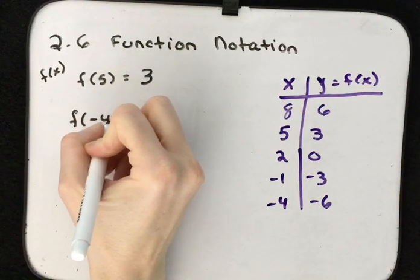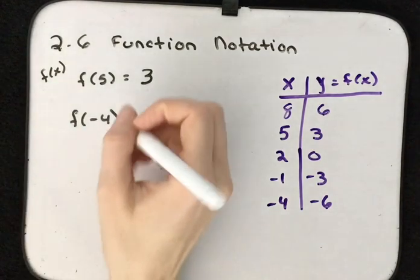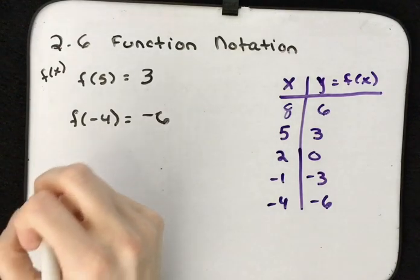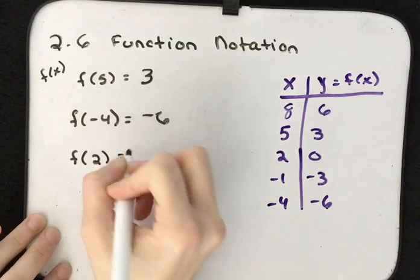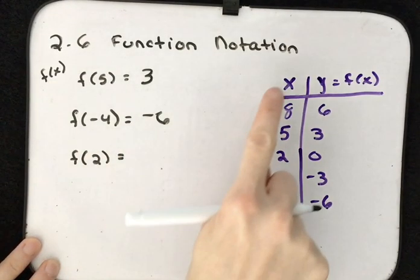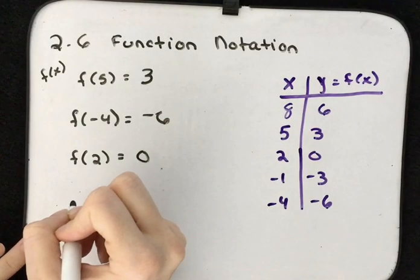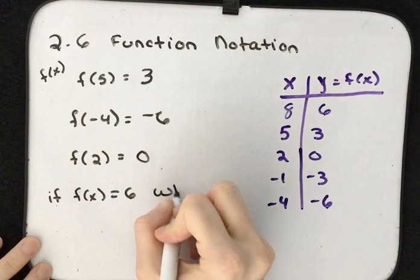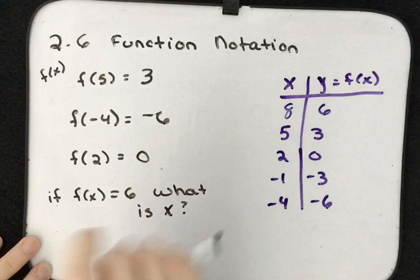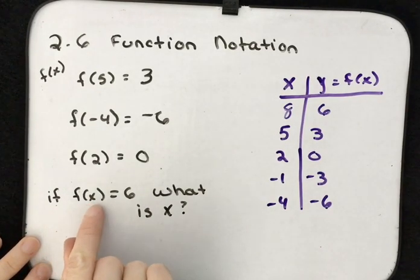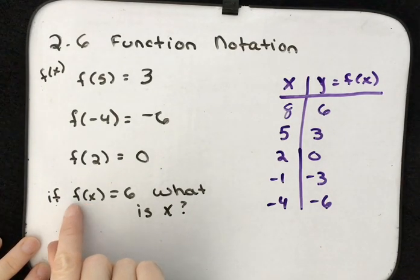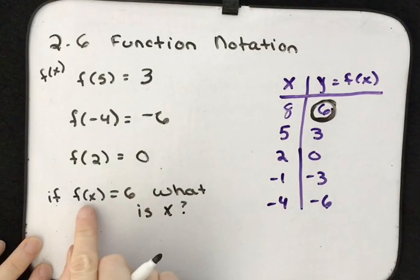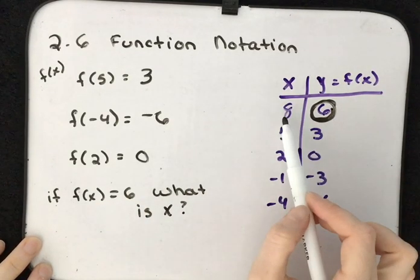For f of negative 4, x is replaced with negative 4, and that gives us negative 6. For f of 2, x is replaced with 2, giving us a value of 0. We can also read the table the other way: if f of x equals 6, what is x? We look down the f of x side, find 6, and in order to make f of x equal 6, we need x equals 8.